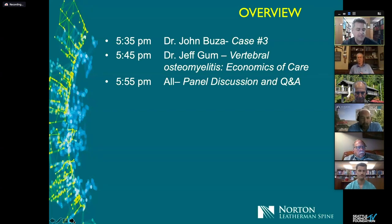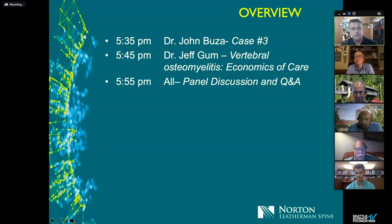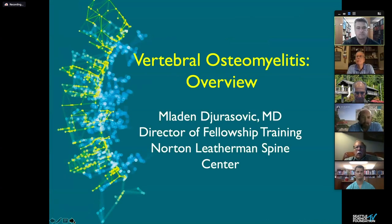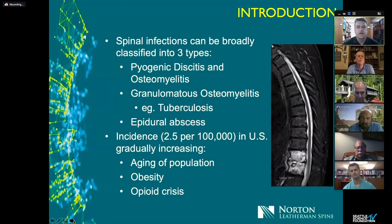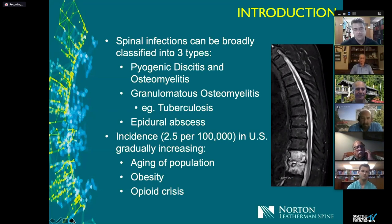Please feel free, as the cases go up or during the presentations, to send questions in through the chat box and we'll do our best to answer them. So, a quick overview of vertebral osteomyelitis. Spinal infections can broadly be classified into three types: pyogenic discitis and osteomyelitis, which is most common in the US.